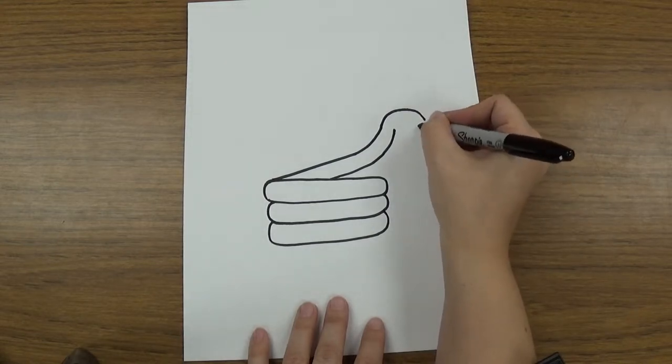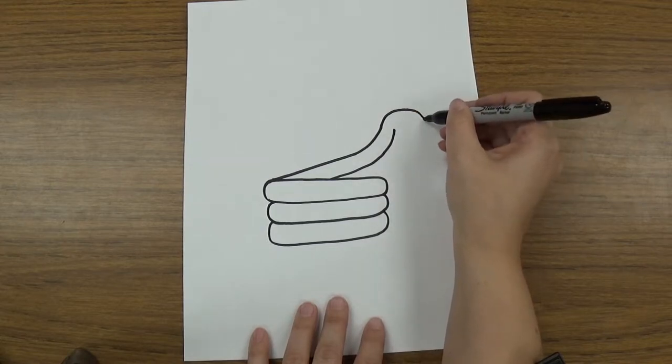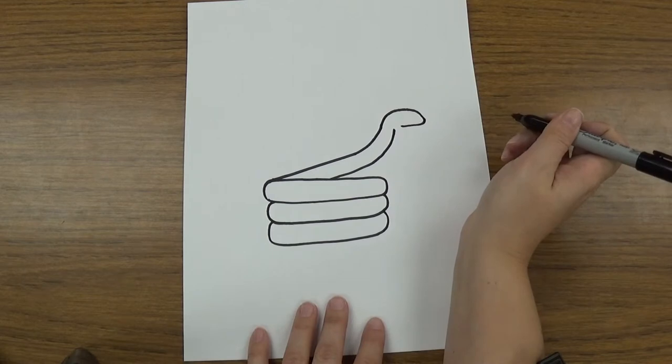And we're gonna draw a curve line that comes back and it's almost gonna touch this line but not quite. So it's gonna come back like this and not quite touch, just like that.